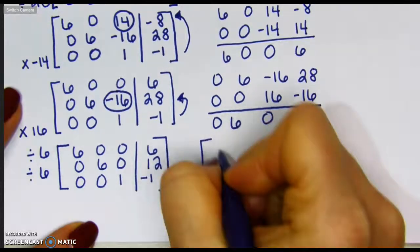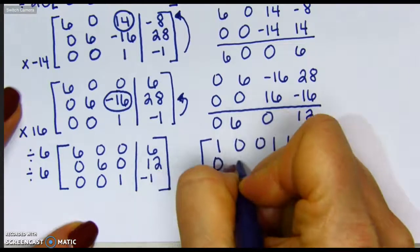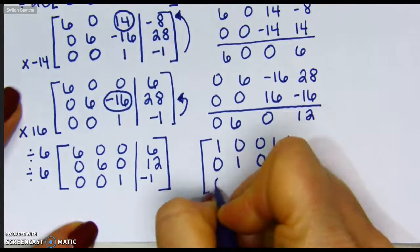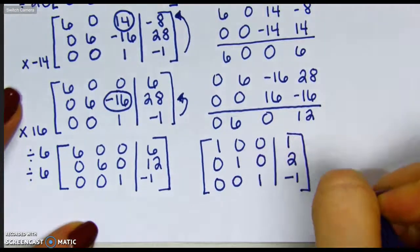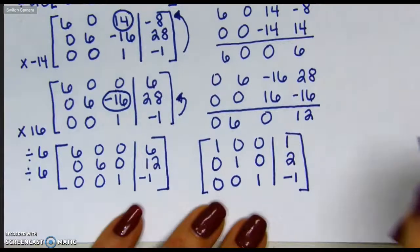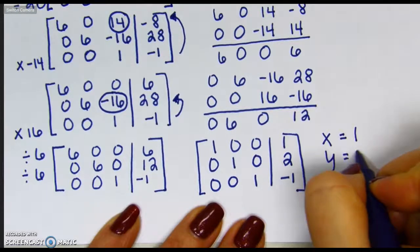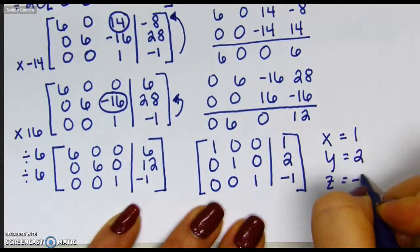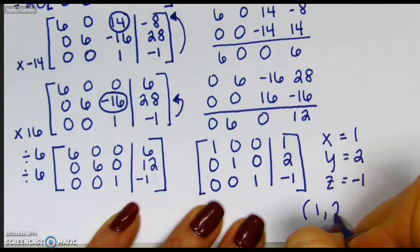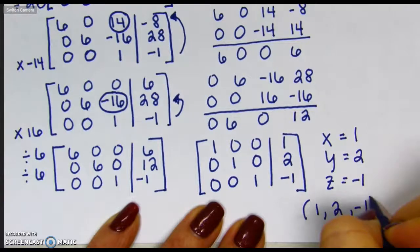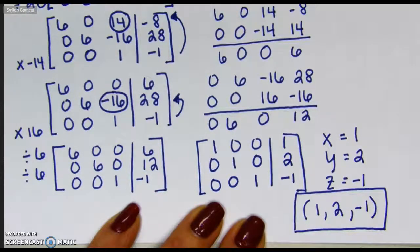Giving me 1, 0, 0, 1, 0, 1, 0, 2, and that bottom row we already had done. So based on this, I see that my x value equals 1, my y value is 2, and my z value is negative 1. Writing as a coordinate pair, I have 1, 2, negative 1 as the solution for this system of equations.